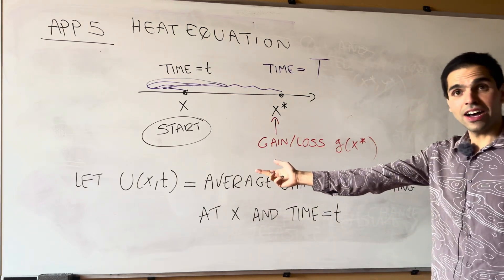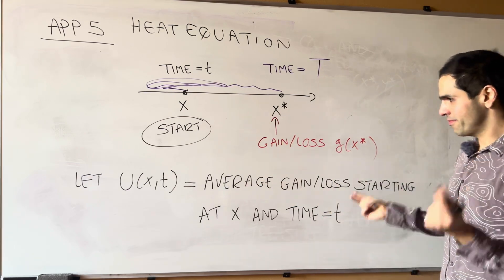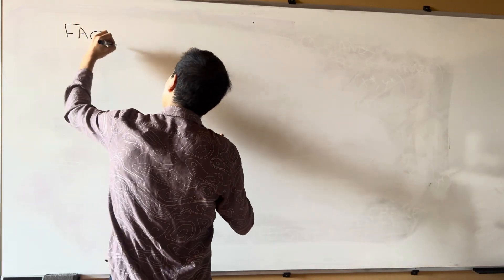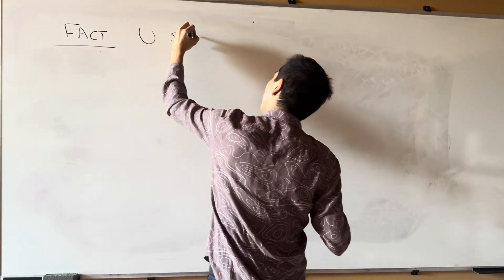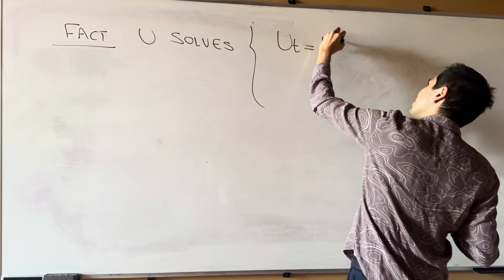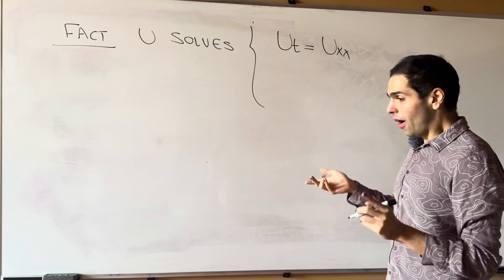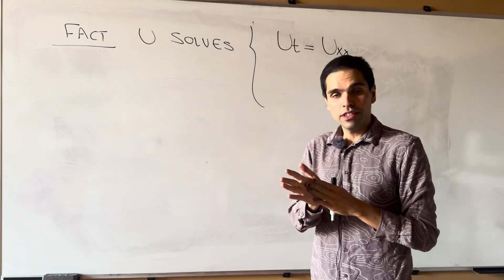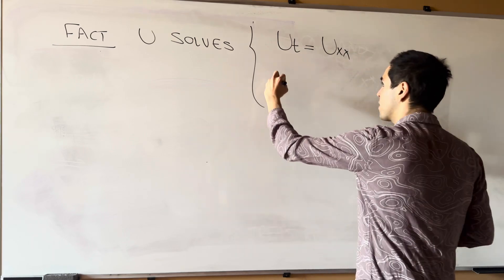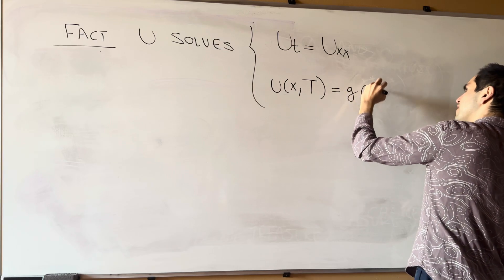And it turns out, this function u, once again, solves the heat equation. So, fact, u solves. So, u_t equals u_xx in our region. But also, at the time capital T, the gain is just g. So, u of x T is g of x.